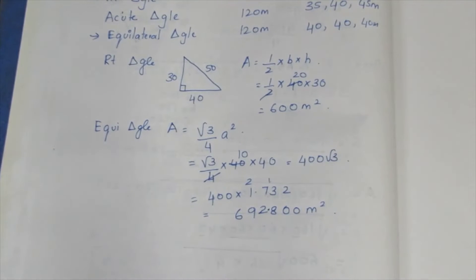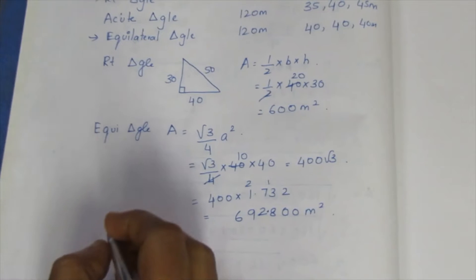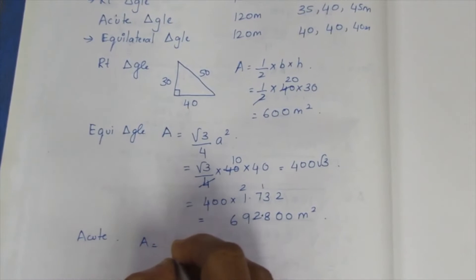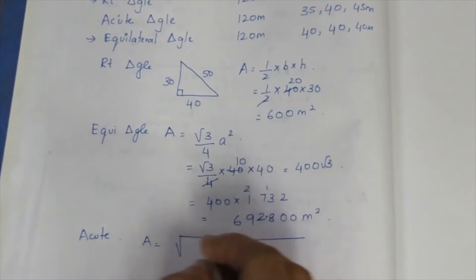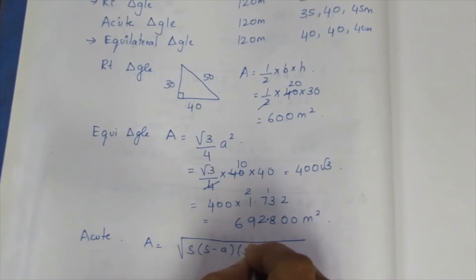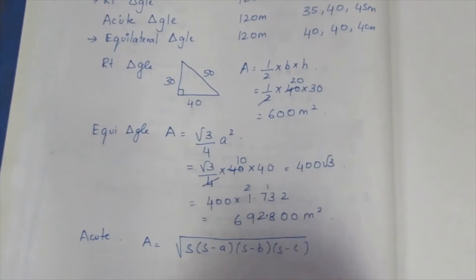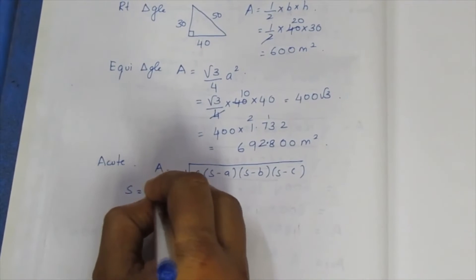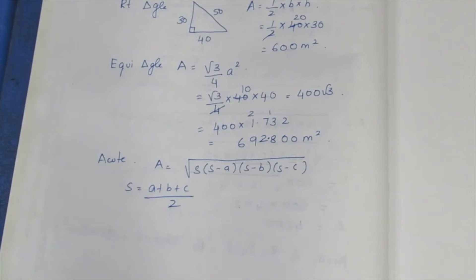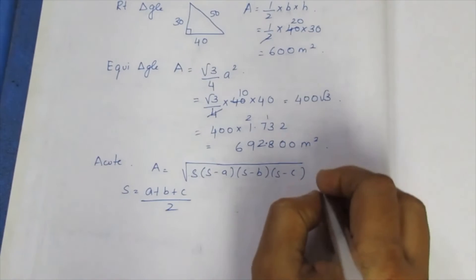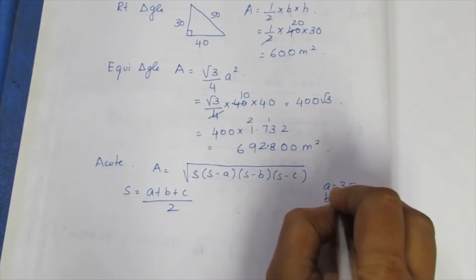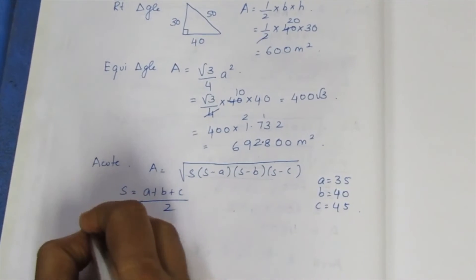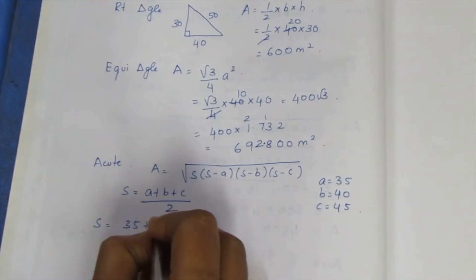Now for the acute triangle, we use Heron's formula. The area is the square root of s(s−a)(s−b)(s−c), where s is the semi-perimeter: s = (a + b + c) / 2. The sides are a = 35, b = 40, and c = 45. So s = (35 + 40 + 45) / 2 = 120 / 2 = 60.